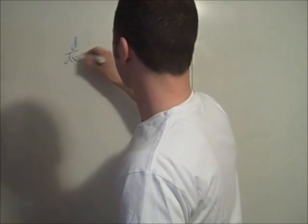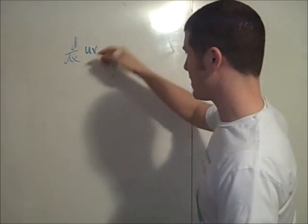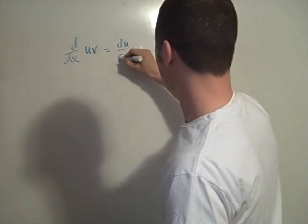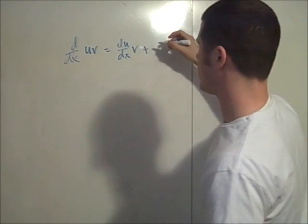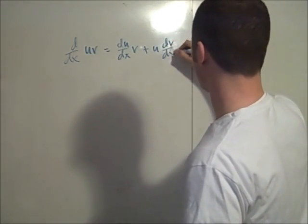So if you have the derivative of a product here, u and v are functions of x, the derivative of a product is the derivative of the first one du/dx times the second one plus the first one times the derivative of the second one, that's dv/dx.